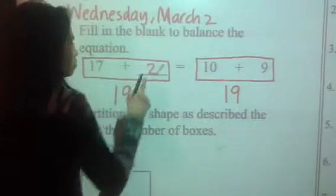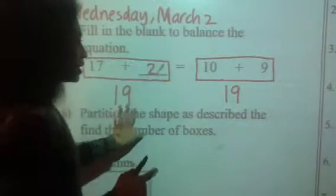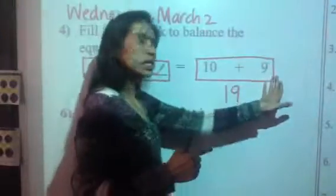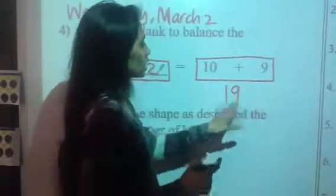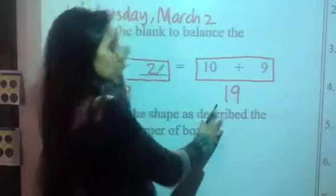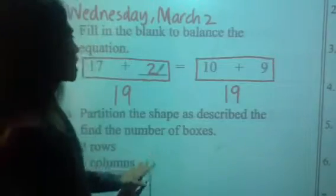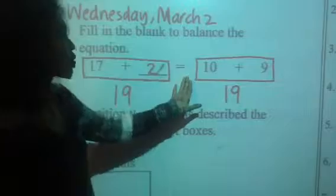So, 17 plus 2 is what? 19. And then, 10 plus 9 is 19. Are they equal? Yes, they're equal. And are they balanced? They are balanced. So, we know that our answer is correct.